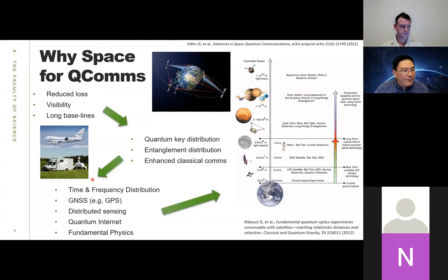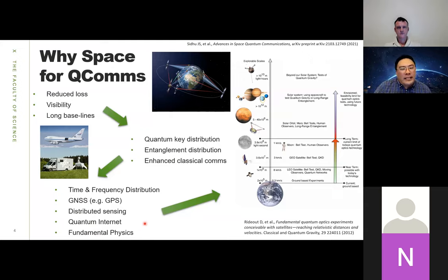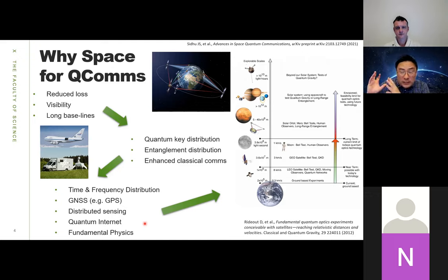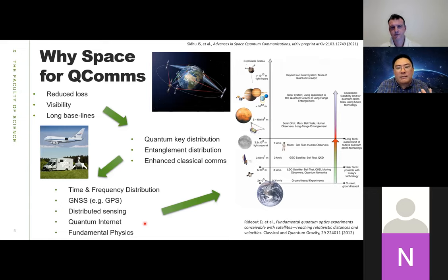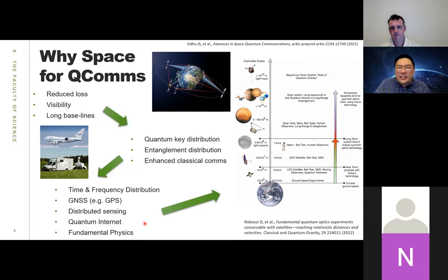I've talked about applications: quantum key distribution, distributing entanglement, time and frequency distribution, GPS, sensing, the quantum internet, and quantum networking of computers. One of my motivations is also how we test fundamental physics — the relationship between gravity, general relativity, and quantum mechanics is still a very open question. We need experimental evidence as to how those two things interact. Hence we need to go to space to test over long distances and large differences in gravitational field to really probe how quantum mechanics actually interacts with gravity.